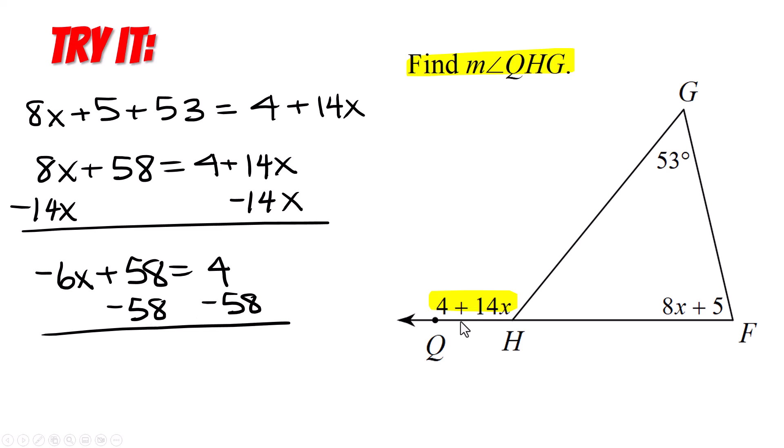The next move is to subtract the 58, which I did really fast. Okay, now we have negative 6x equals negative 54 and we end up with x equals 9. And a bunch of students will stop here because that's a ton of work and it feels like you've got the answer. And you're not wrong, you're just not finished. They really wanted us to find the actual angle measurement of QHG. QHG is the external angle. So you have to take this 9 and plug it in here for x. So let's do that. And we end up with 130 degrees.